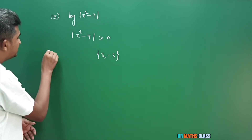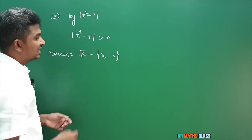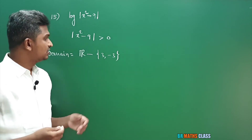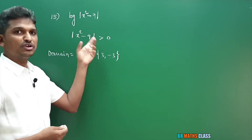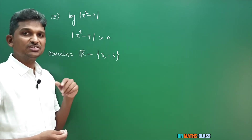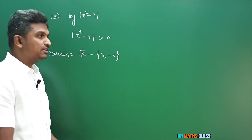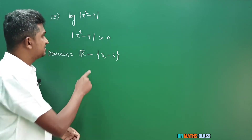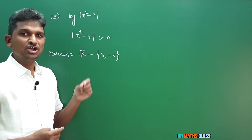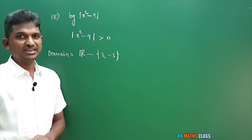For any other real number, this condition holds. For example, if you take 4, 100, or -2, you get a positive expression. So the domain is all real numbers except 3 and -3.